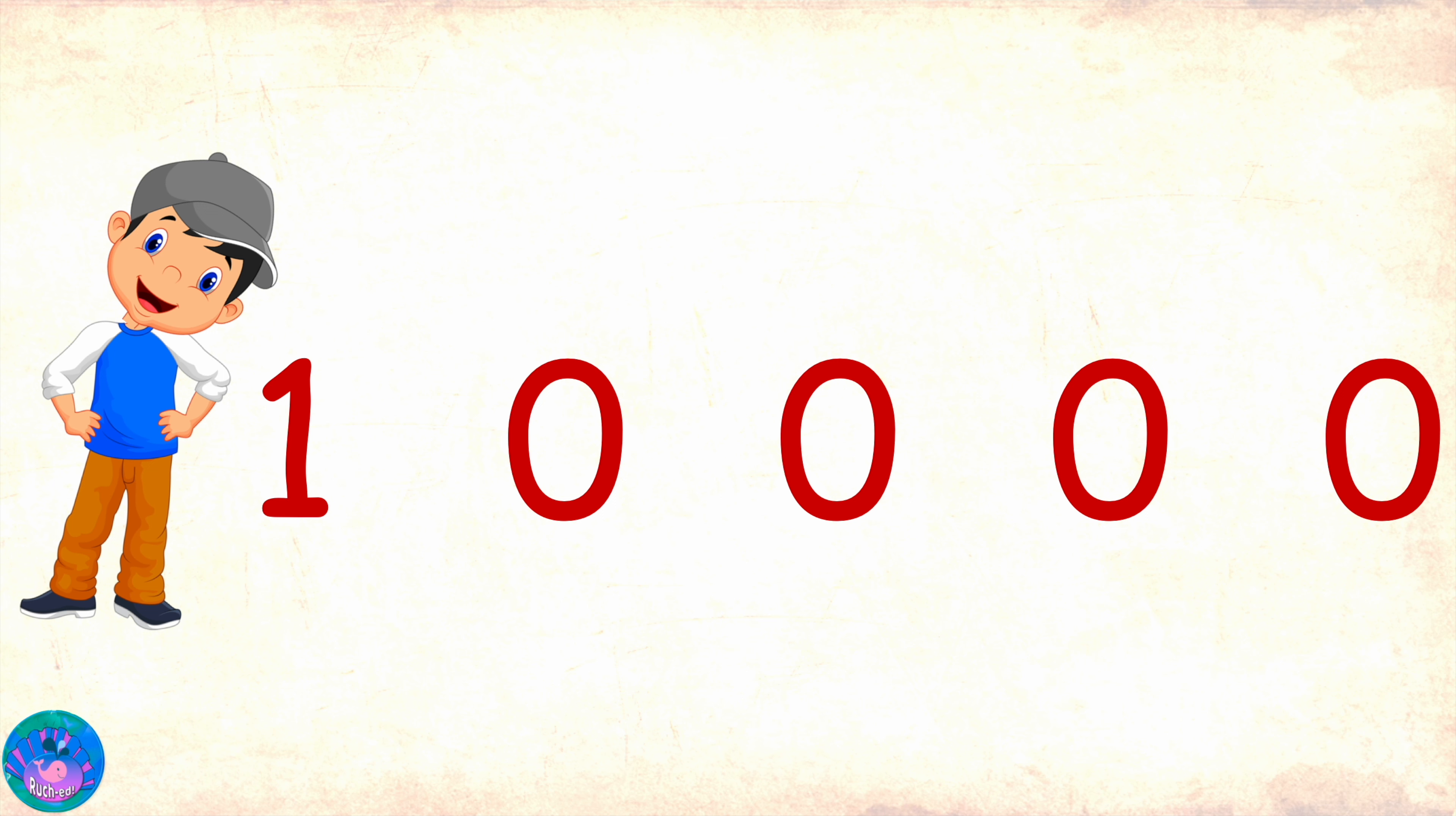Now, before the hundreds place, we have the thousands place and before that, we have the ten thousands place. Now, thousands place is generally abbreviated to Th and ten thousands to TTh. Okay, so we have ones, tens, hundreds, thousands and ten thousands.